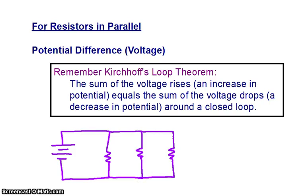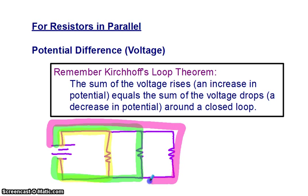What we've got here are three different loops. We have a path that goes through the first resistor and back to the battery. We have a path that goes through the second resistor and back to the battery. And we have a path that goes through the third resistor and back to the battery.